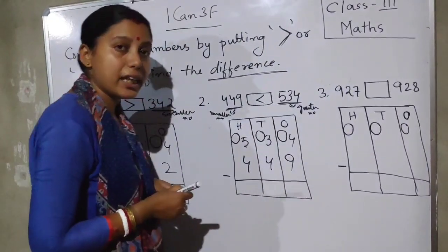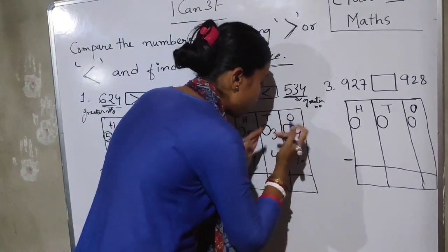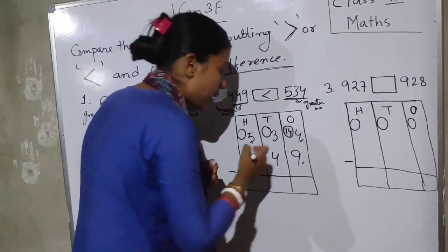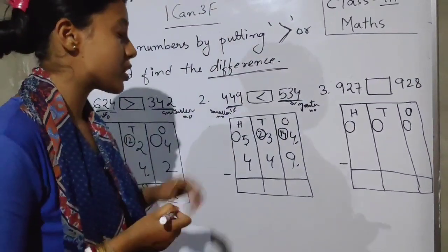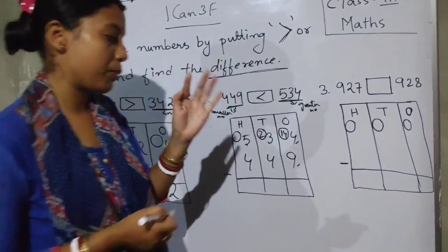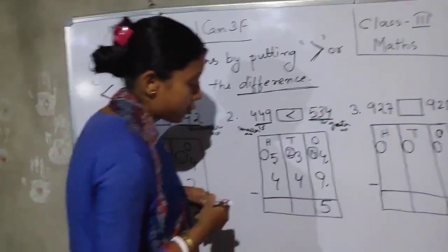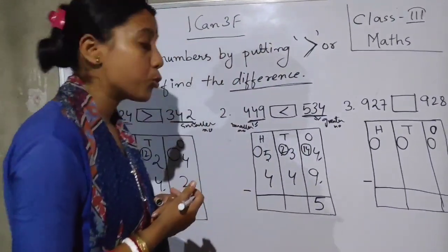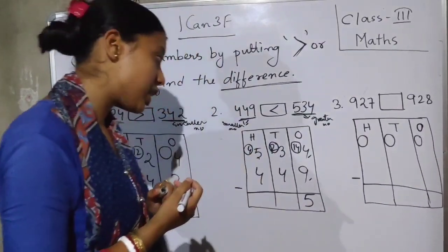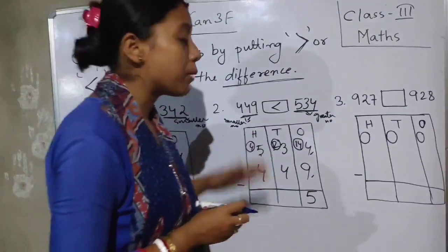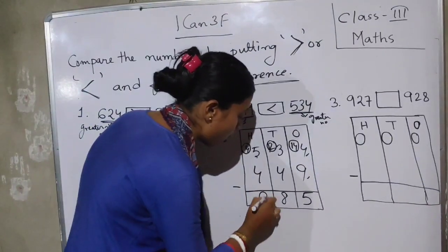You see: 4 minus 9 — we can't do that since 9 is bigger and 4 is smaller, so we regroup. We take 10 from the tens, giving us 14 ones and 2 tens. 14 minus 9 is 5. Now 2 minus 4 — again we can't, so we regroup: 12 tens and 400 hundreds. 12 minus 4 is 8, and 4 minus 4 is 0. Done.